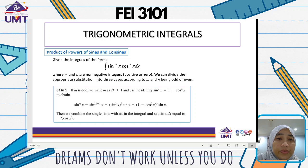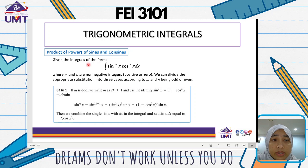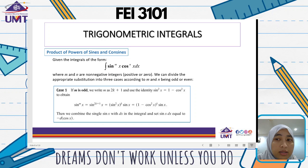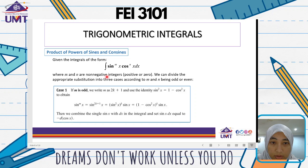Okay students, let's continue. Now we want to have a look at the trigonometric integrals — the product of powers of sines and cosines. Given integrals of the form sine to the power of m times cos to the power of n dx, where m and n are non-negative integers, positive or zero. We can divide the appropriate substitution into three cases according to m and n being odd or even.